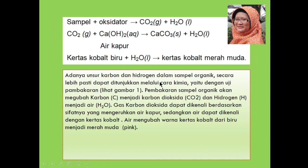Adanya unsur karbon dan hidrogen dalam sampel organik secara lebih pasti dapat ditunjukkan melalui cara kimia, yaitu dengan uji pembakaran. Pembakaran sampel organik akan mengubah karbon menjadi karbon dioksida dan hidrogen menjadi air. Gas karbon dioksida dapat dikenali berdasarkan sifatnya yang mengeruhkan air kapur, sedangkan air dapat dikenali dengan kertas kobalt, di mana air mengubah warna kertas kobalt dari biru menjadi merah muda atau pink.